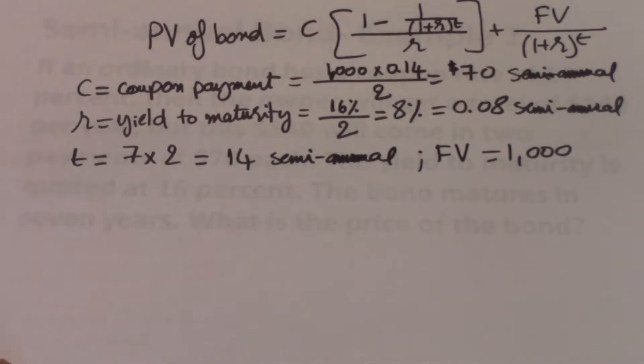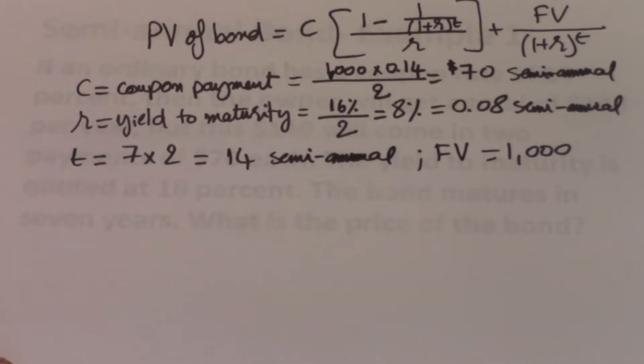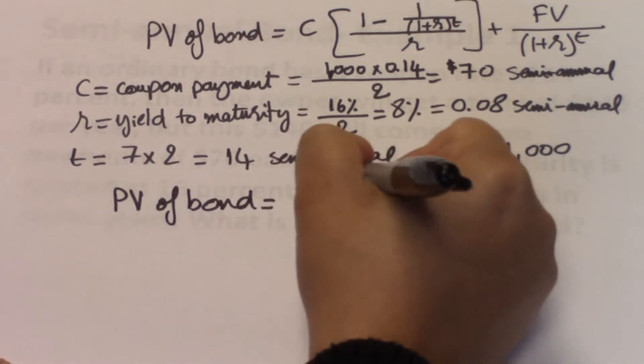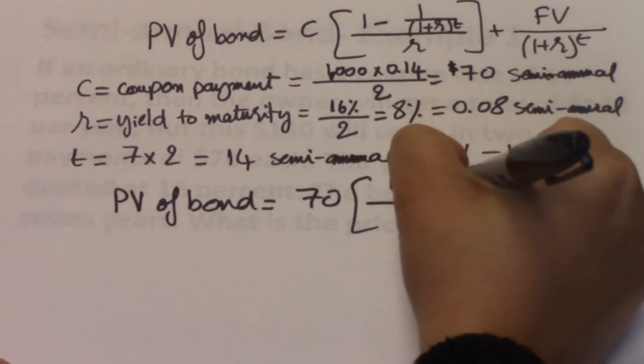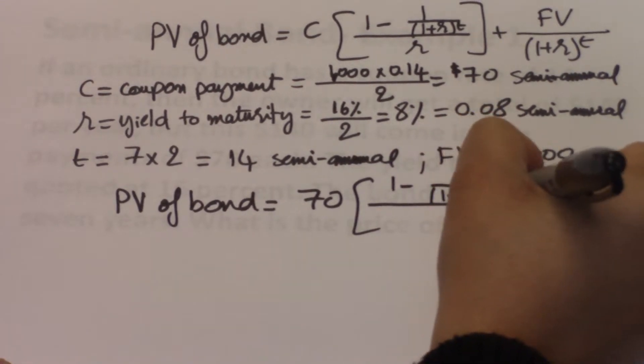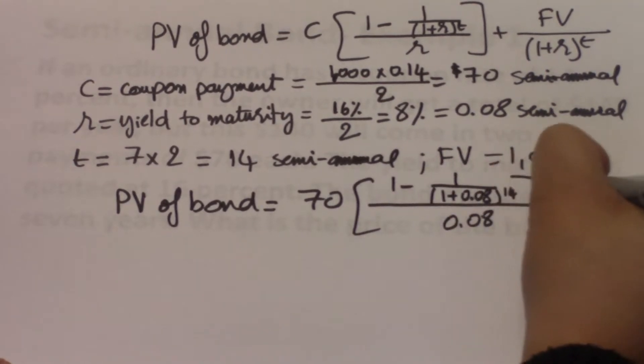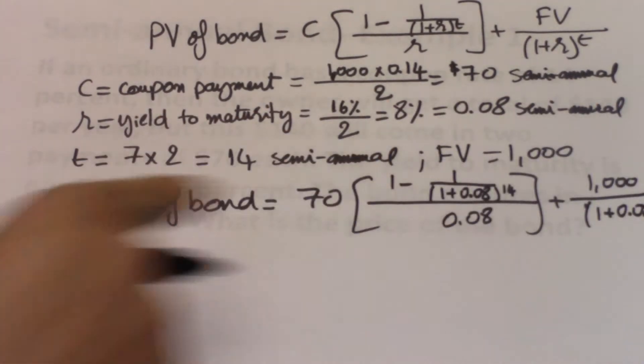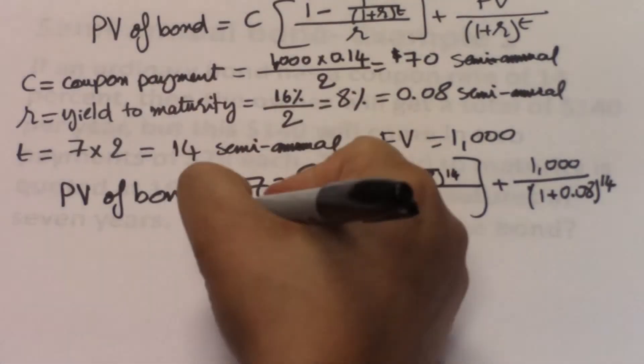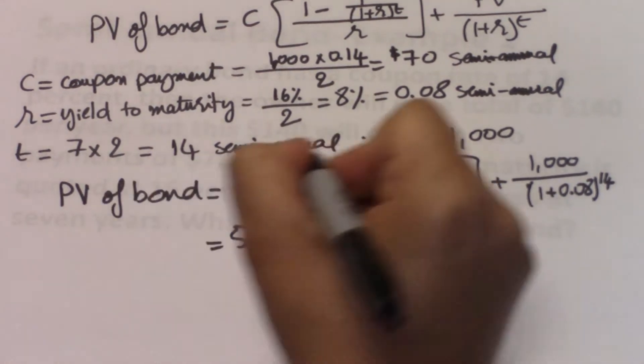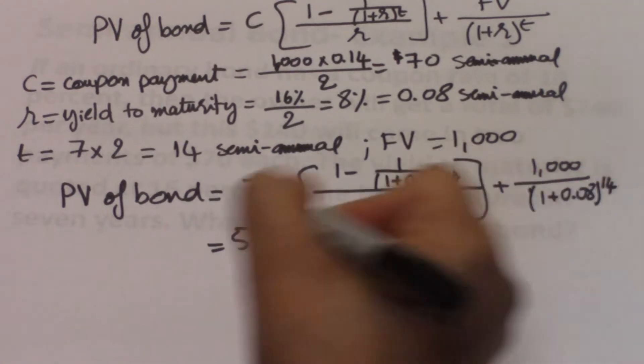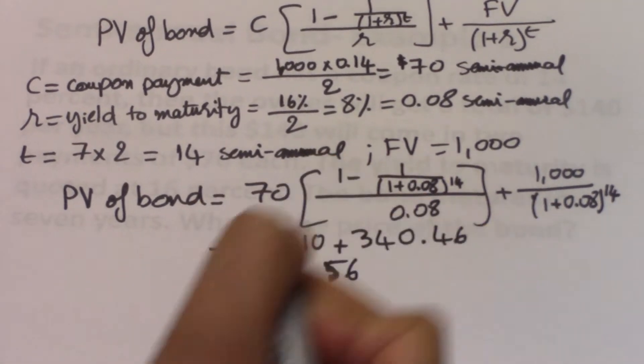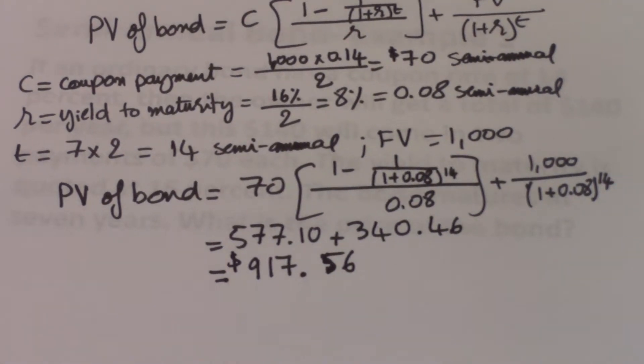Now we have all of our variables. All we need to do is just plug them into our formula. So PV of bond equals to 70 times 1 minus 1 over 1 plus 0.08 to the power of 14 divided by 0.08 plus 1,000 divided by 1 plus 0.08 to the power of 14. If you were to calculate the first part of the equation, you will get 577.10 plus the second part equals to 340.46. You just add them together, which will give you a price of 917.56. So this is the price of this semi-annual bond today.